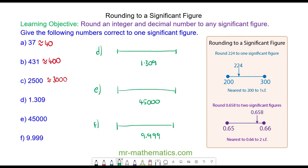For question D, the most significant figure is the 1 because it has the highest value. So it is between 1 and 2. 1.309 is approximately here, and you can see it is nearer to 1 than it is to 2. So this is approximately 1.